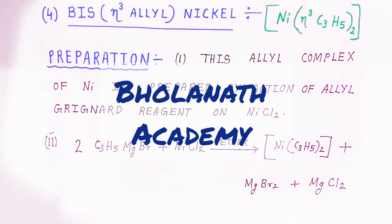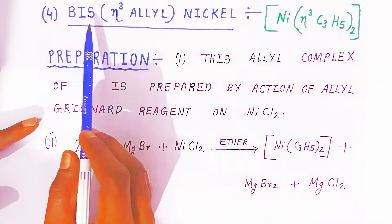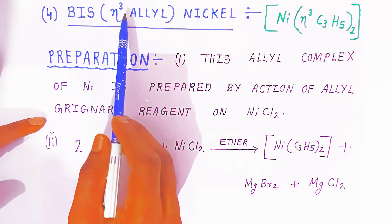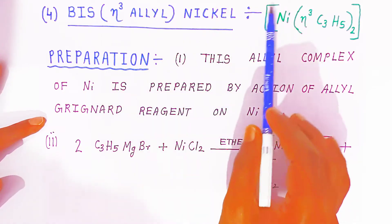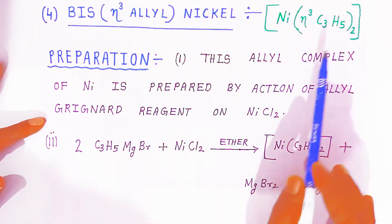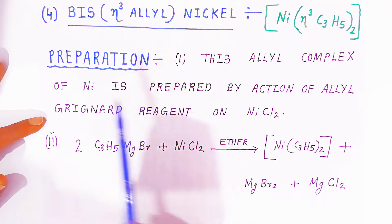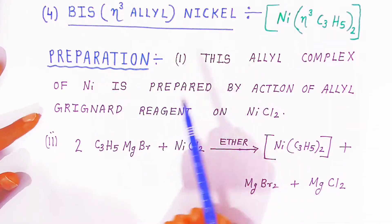Hello students, once again welcome to Bholanath Academy. In organometallic chemistry, we are going to see the third type of organometallic compound, called the eta-3 allyl nickel complex. This is how we are showing the nickel complex of allyl.